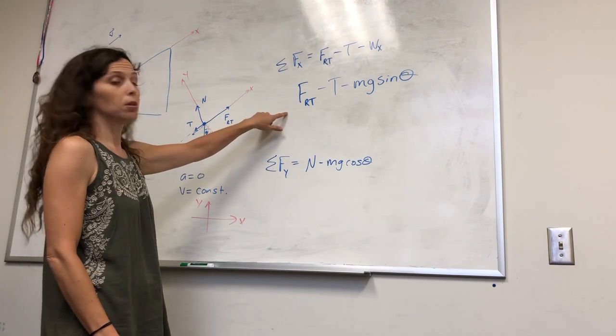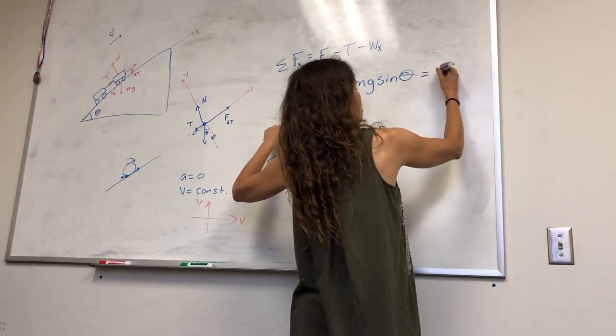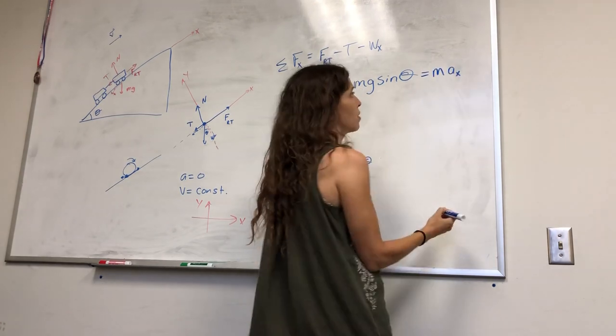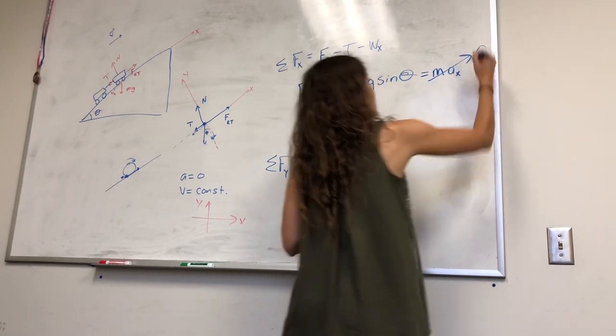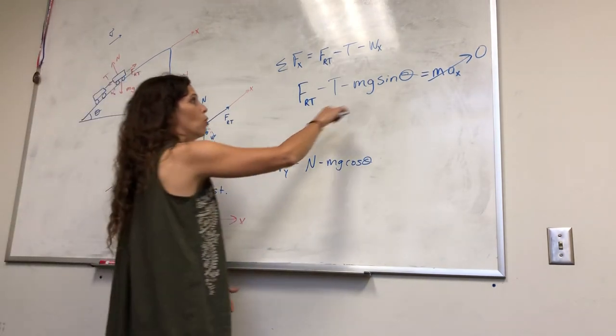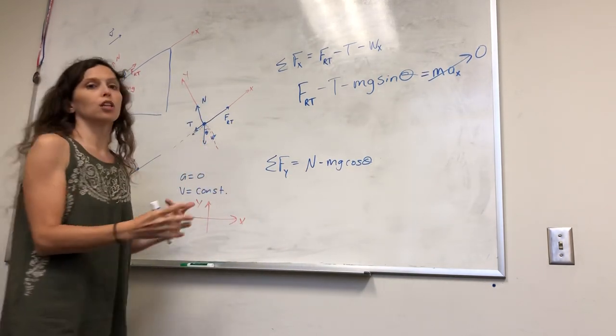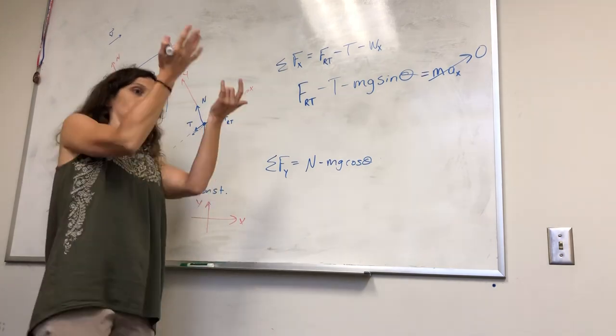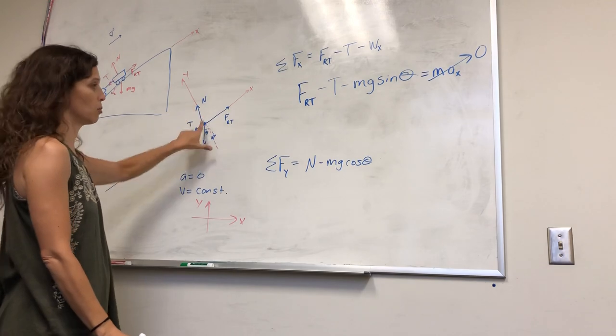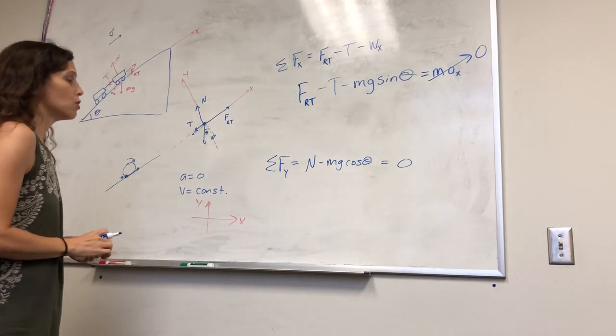The next step is to apply Newton's second law. Newton's second law tells me that the sum of these forces in the x-direction should equal the mass times the acceleration in that direction. However, the acceleration is equal to zero. It's not accelerating. So, this whole thing is equal to zero. In the y-direction, that's this way. It is not accelerating. It's not jumping up off of the incline or sinking down below the incline. It's not accelerating up or down. So, this is also going to equal zero.